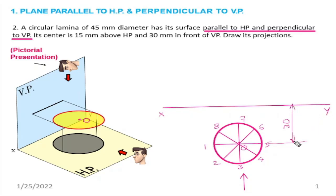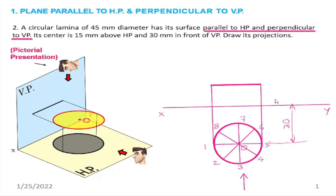The center is at a distance of 30 mm in front of VP. From the XY reference line, we mark 30 mm in front of VP for the center. The diameter is 45 mm (radius 22.5 mm). We draw a distance of 15 mm height for the front view, and draw a line — that line is the plane appearing as a line in the front view.